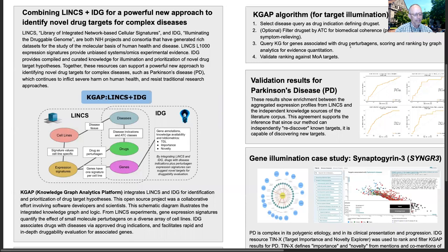NIH programs LINCS, Library of Integrated Network-Based Cellular Signatures, and IDG, Illuminating the Druggable Genome, have generated rich open access datasets for the study of the molecular basis of human health and disease.